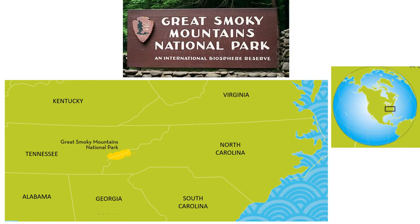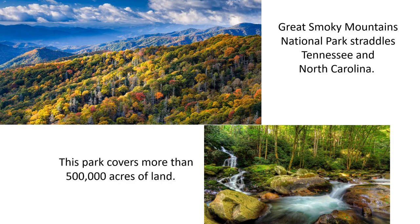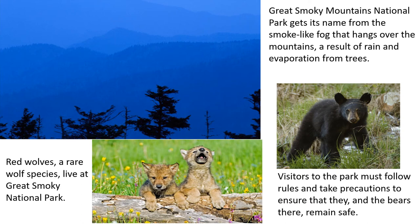We are now heading south to Great Smoky Mountains National Park. It is world renowned for its diversity of plant and animal life, and this is America's most visited national park. The Great Smoky Mountains National Park straddles Tennessee and North Carolina and covers more than 500,000 acres of land. It gets its name from the smoke-like fog that hangs over the mountains, a result of rain and evaporation from trees. Red wolves, which are a rare wolf species, live here. Visitors must follow rules and take precautions to ensure they and the bears there remain safe — so don't feed the bears.